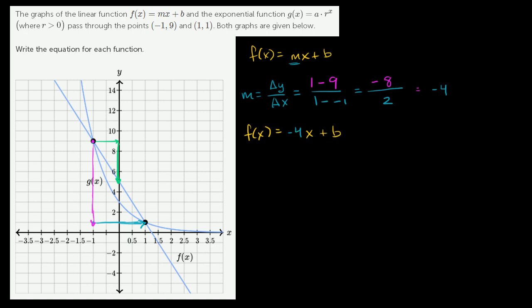So now let's think about what b is. To figure out b, we could use either one of these points to figure out what f(x) is given an x, and then we can solve for b. So let's try f(1), because 1's a nice simple number. So we could write f(1), which would be -4 times 1 plus b, and they tell us that f(1) is equal to 1. And so this part right over here, we could write that as -4 + b = 1. And then we could add 4 to both sides of this equation, and then we get b = 5.